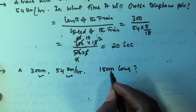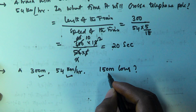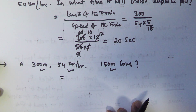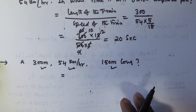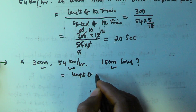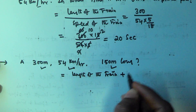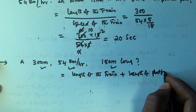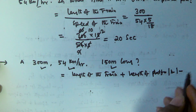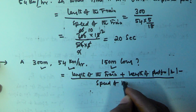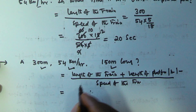As I told you in the previous video, to cross a platform, bridge, tunnel, or a train at rest, the time is given by the length of the train plus the length of the platform (or tunnel or stationary train), divided by the speed of the train. In our case the length of the train is 300 meters.